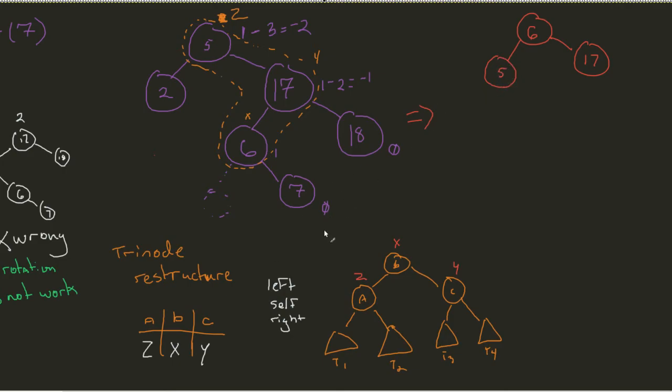And so, now we get to look at where those T1s, T2s, T3s, and T4s are. Again, the T1 is the left node of whatever our original Z was. So, 5 is going to get the 2.